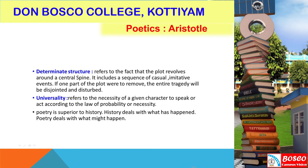Determinate structure refers to the fact that a plot joins with a sequence of causal and imitative events. If one were to remove even one part of the plot, the entire tragedy will be disjointed and disturbed. Every part of a good plot is necessary. If the action revolves around a central spine, it creates a full skeleton of plot; remove one bond and the entire body of action becomes unstable, since every bond radiates from the central spine and is fully necessary.